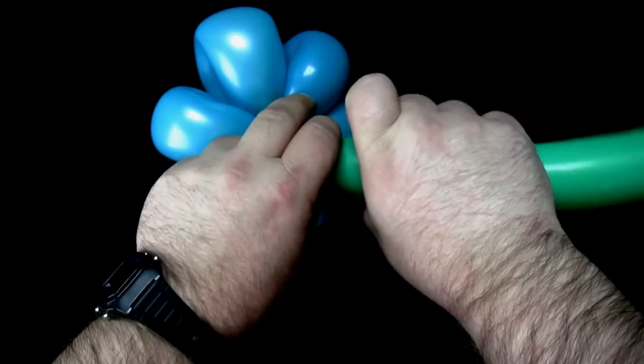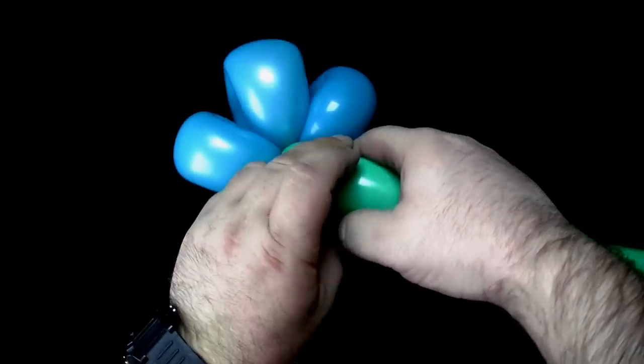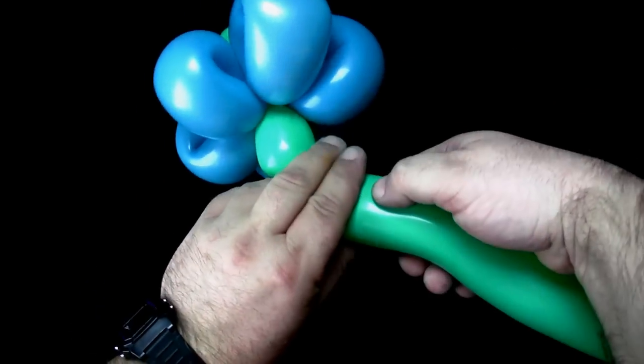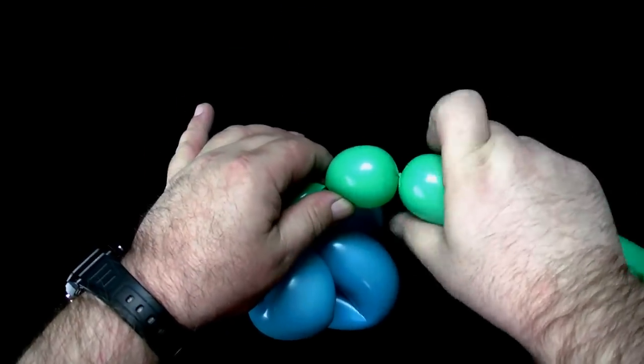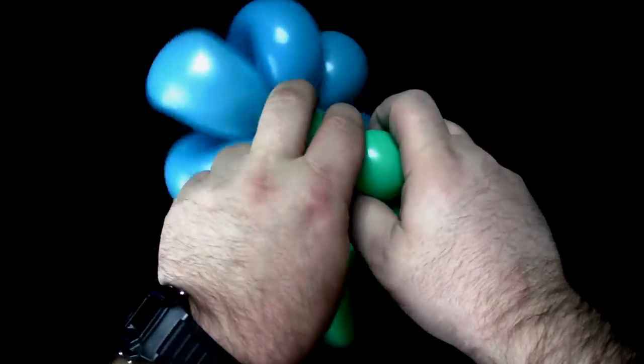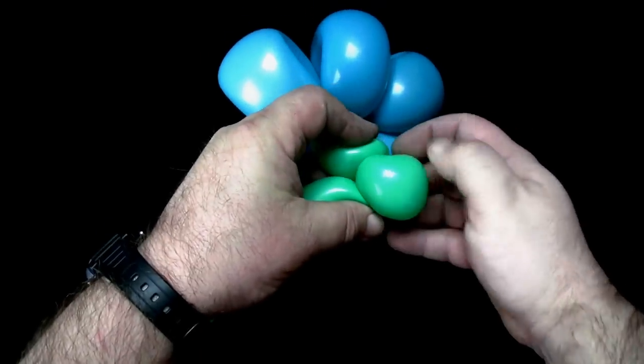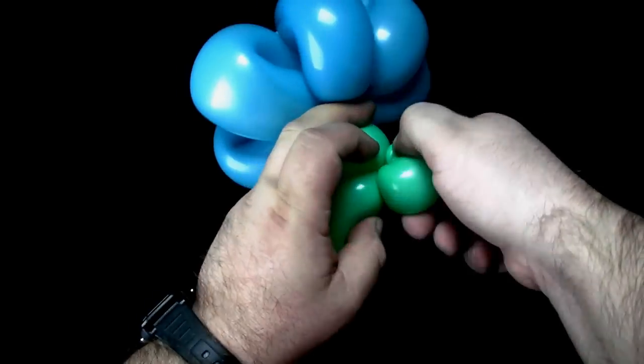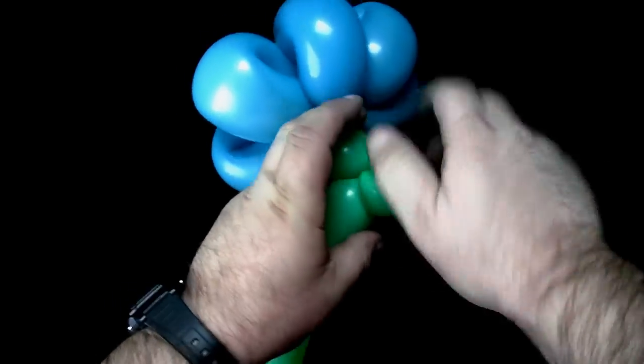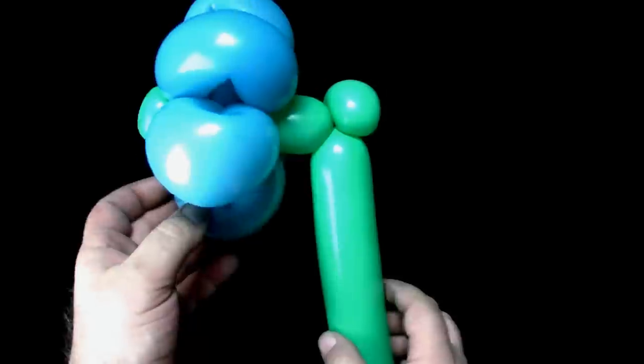Twist a two-finger bubble. Make another two-finger bubble and pinch twist it. This will form a 90 degree turn in the balloon.